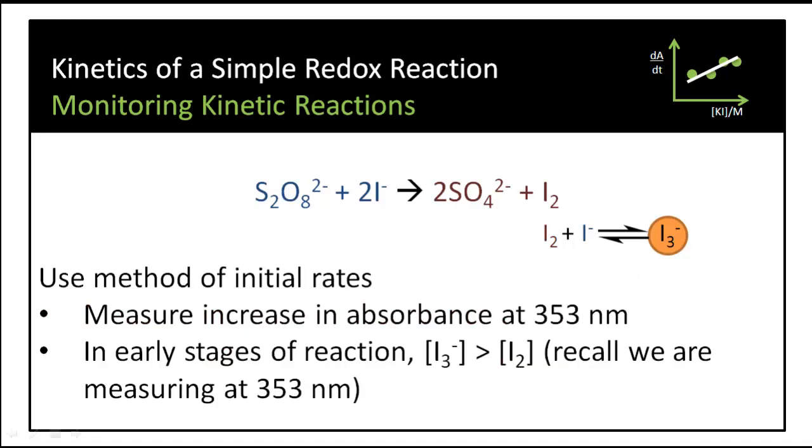We're going to use the method of initial rates. So we can measure the increase in absorbance at 353 nanometers where the triiodide absorbs. And we can do this because at the start of the reaction, the concentration of triiodide will be higher than that of iodine.